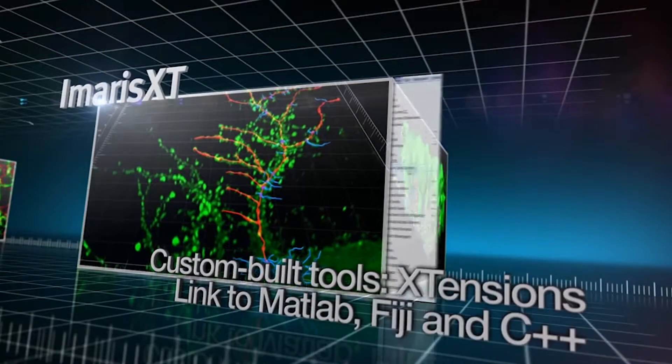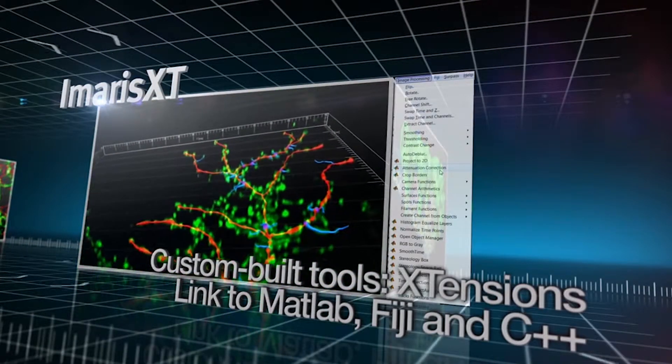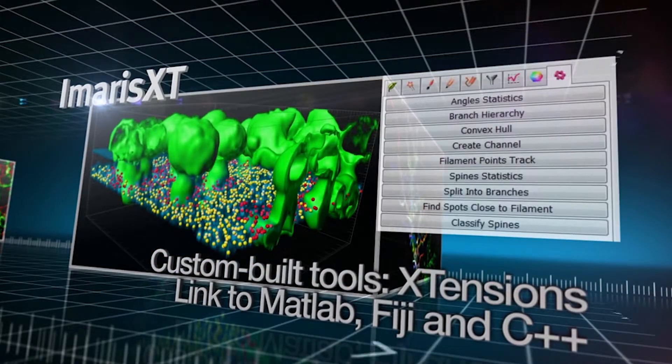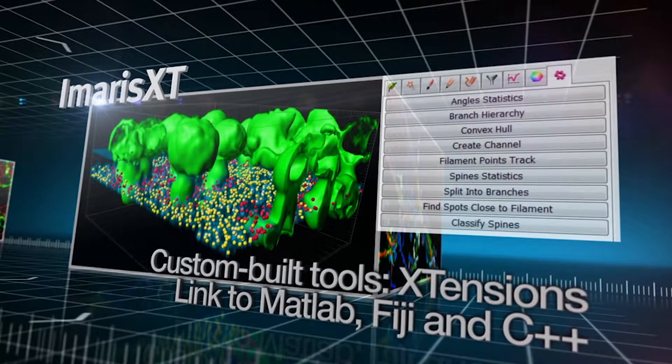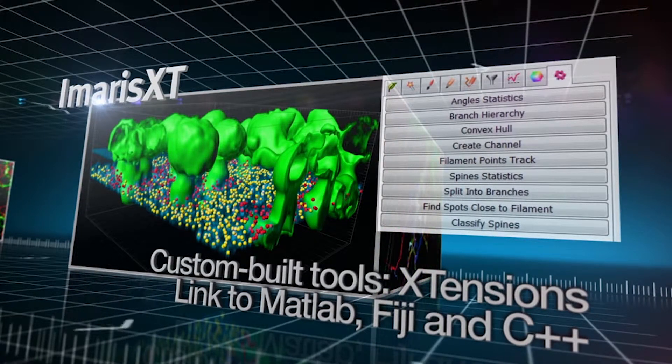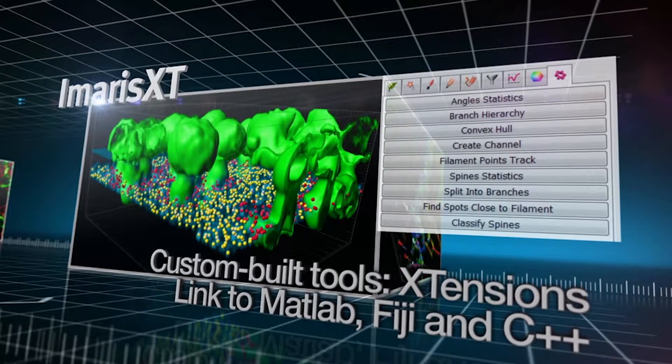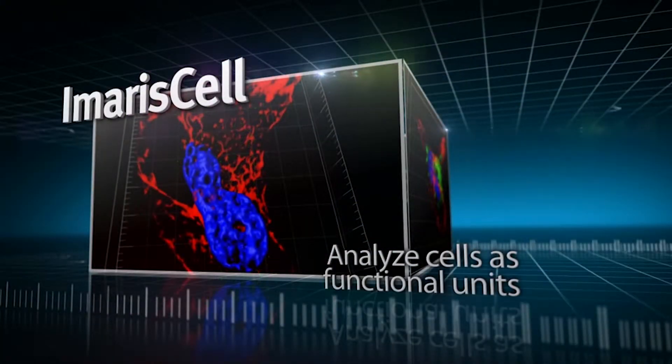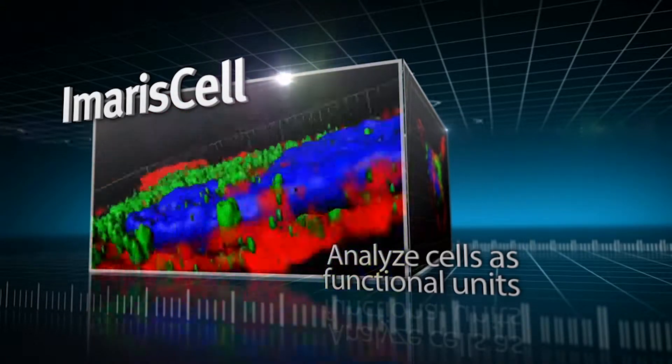Imaris XT is a module designed to create an interface for performing custom written segmentation and analysis algorithms within Imaris. Create your own MATLAB and ImageJ extensions to tailor the output of Imaris to your analytical needs. Obtain novel qualitative and quantitative insights into cell structure and function.